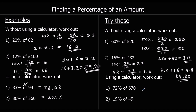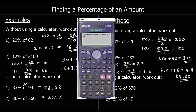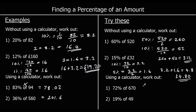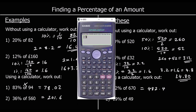With a calculator: seventy-two percent of six hundred and seventy — seventy-two percent times six hundred and seventy — is four hundred and eighty-two point four. And nineteen percent times forty-nine is nine point three one.